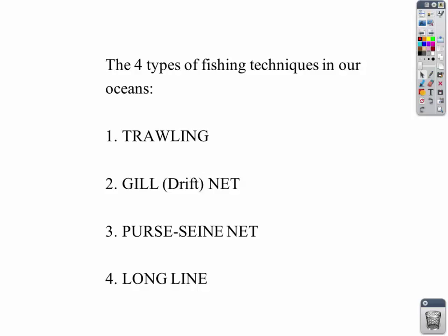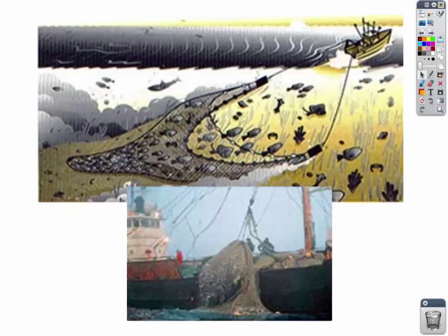Let's start with trawling. Trawling is taking a large net and dragging it across the bottom of the ocean with the net wide open, scooping up as many fish as you possibly can. This is used a lot for shrimp in the shrimping industry, and a lot of our ground fish like flounder are caught this way.